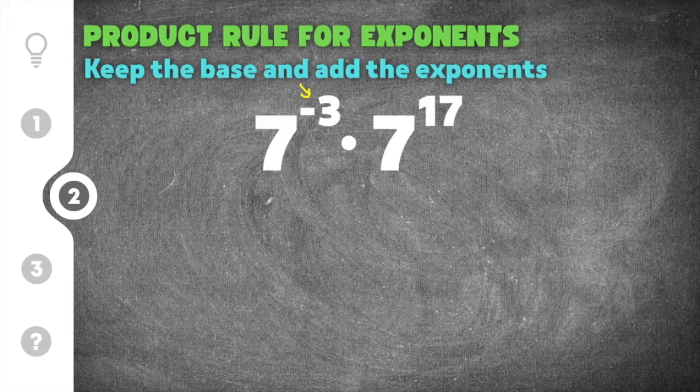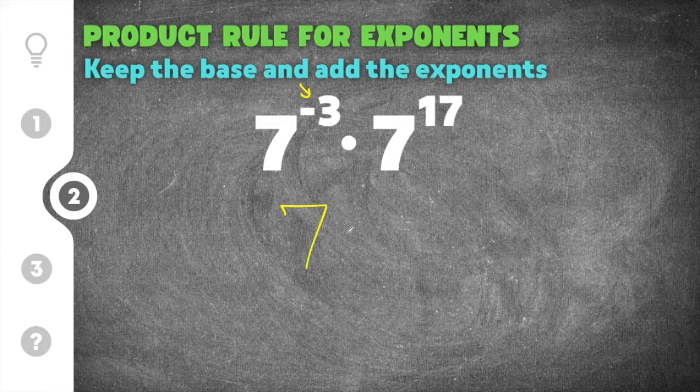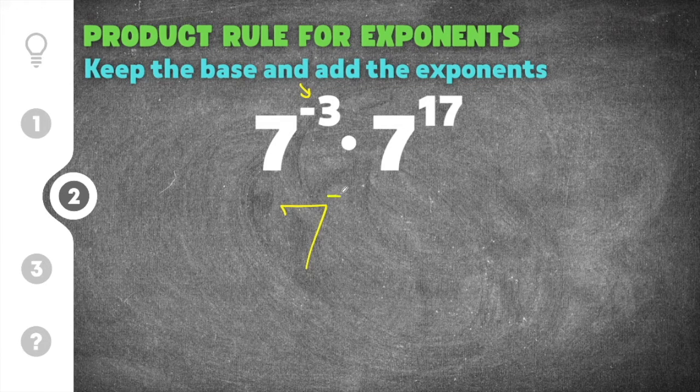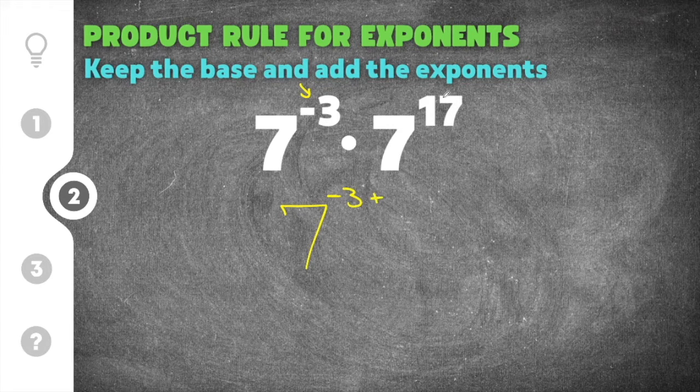In the case of this problem, our base is seven so I'm going to keep the seven. Our first exponent is negative three and I'm going to add that to our second exponent which is seventeen.